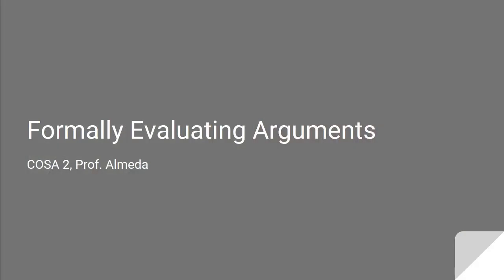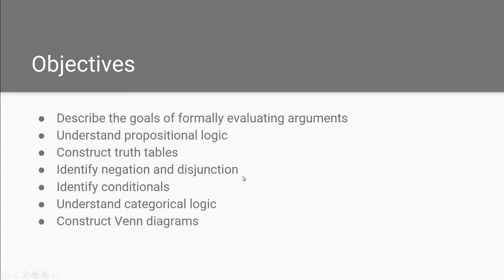Let's talk about formally evaluating arguments. This coincides with chapter two of the OER textbook, Introduction to Logical and Critical Thinking. If you have at least skimmed through that chapter, there's a good possibility you might be lost in a sea of key terms and symbols — it's a tough read, but I'm here to demystify it. By the end of this presentation you should be able to describe the goals of formally evaluating arguments, understand propositional logic using truth tables, identify negation, disjunction, and conditionals, and finally understand categorical logic using Venn diagrams.